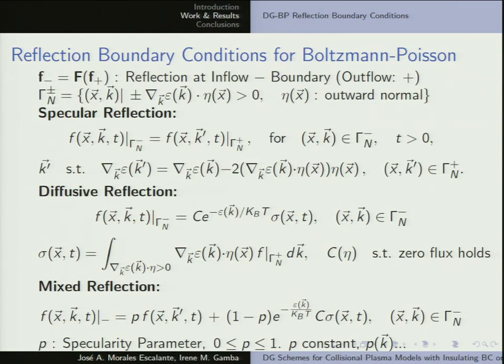Specular reflection — everybody knows from physics — is just: what comes in at a given boundary reflects. This is a mathematical formulation using the electron velocity; it looks complicated but it's very simple.